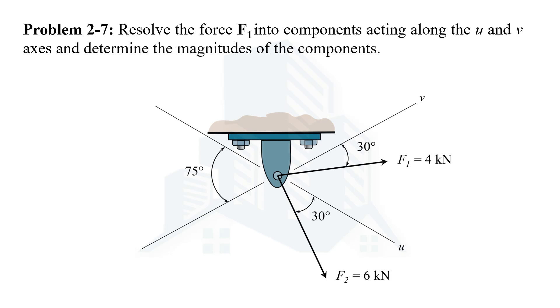In this problem we have been asked to determine the magnitude of the components of F1 force along the U and V axes. This problem is very similar to problem number six that we solved in our previous video, where we determined the magnitude of the resultant and its direction. But in this problem we will be resolving the F1 force into its components in the direction of U and V.